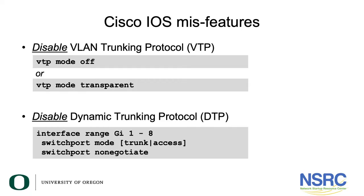Cisco has some misfeatures we strongly recommend you disable. The first is VTP — VLAN Trunking Protocol — which was created for switches to tell each other which VLANs exist so they can automatically add them. We strongly recommend you manage VLANs yourself. To turn this off on newer IOS, you can say 'VTP mode off', in which case the switch will ignore any VTP frames it receives and will not forward them at all.